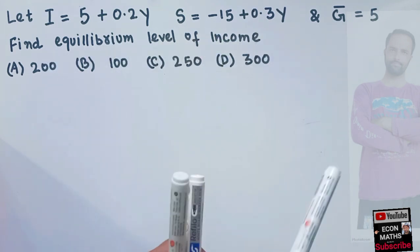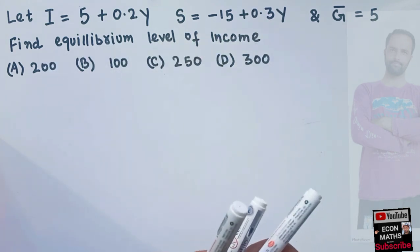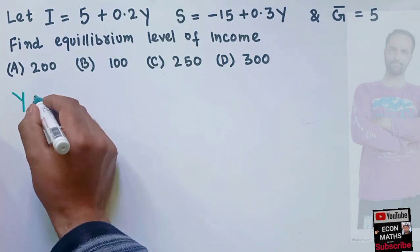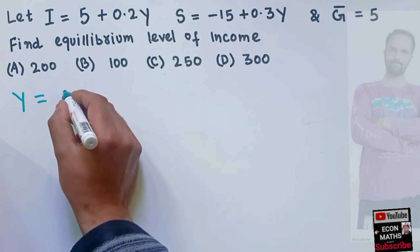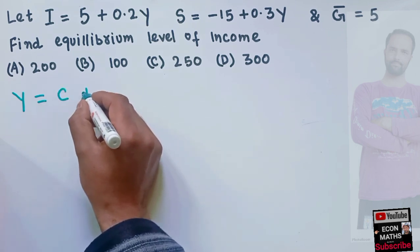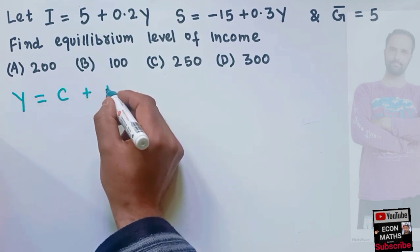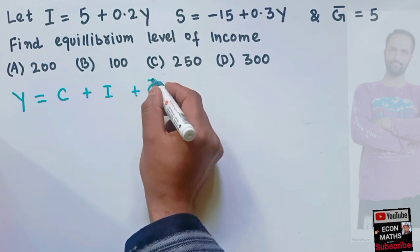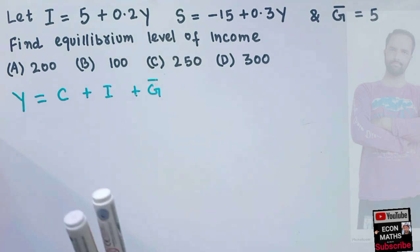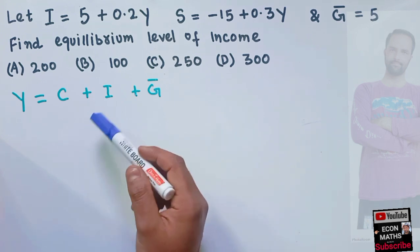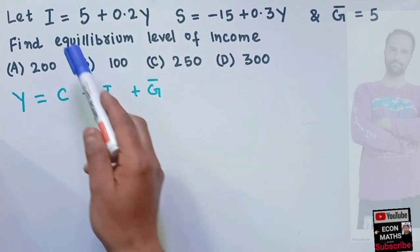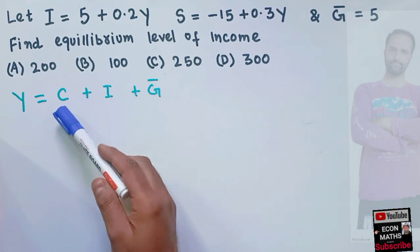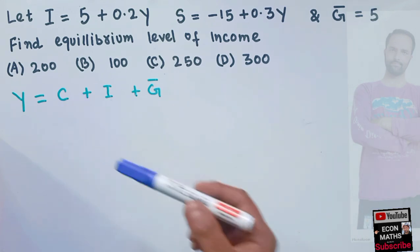The options are being given and we need to find out the correct option. We know that total income should be equal to consumption expenditure plus investment expenditure plus government spending. Government spending is autonomous. We are being given the investment function and government expenditure function, so we need to find out the consumption function first.